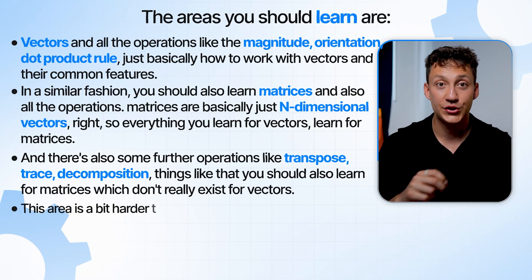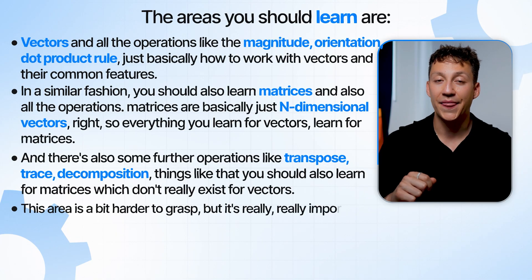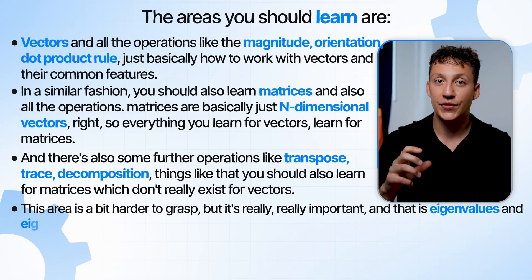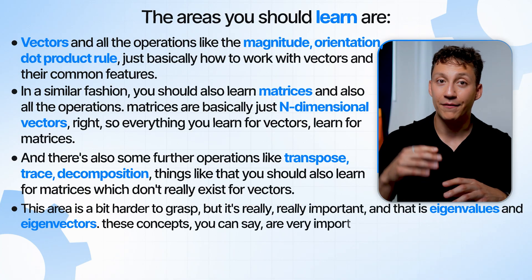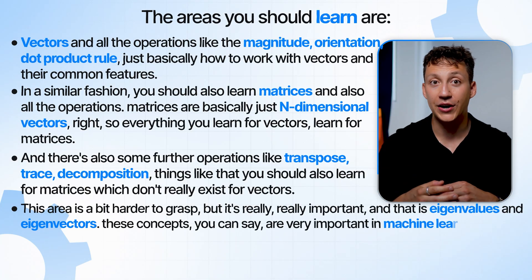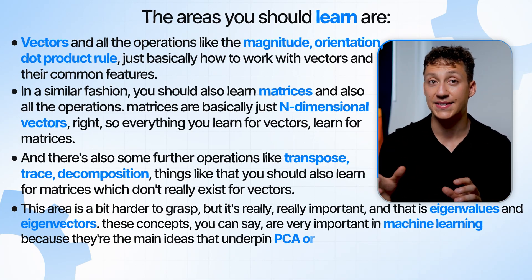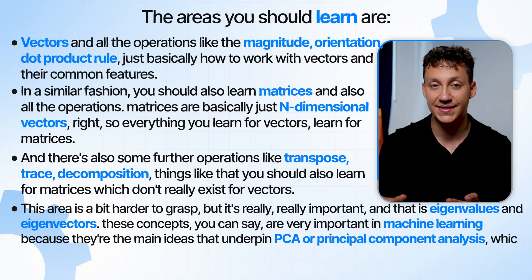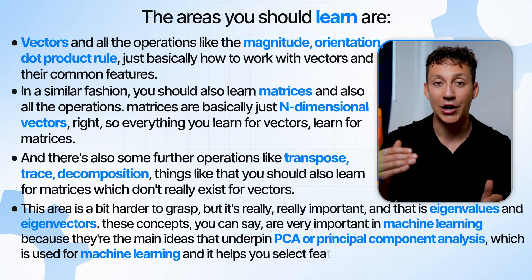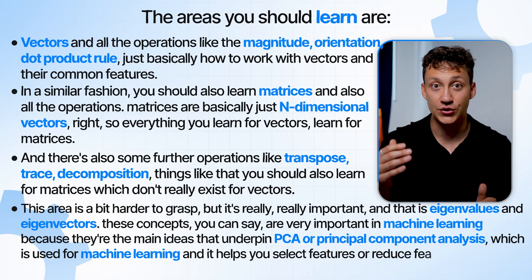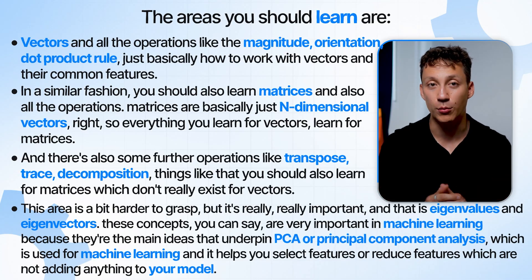Finally — and this is a bit harder to grasp but really important — you should learn eigenvalues and eigenvectors. These concepts are very important in machine learning because they underpin PCA, or Principal Component Analysis, which is used throughout machine learning to help you select or reduce features that aren't adding value to your model.